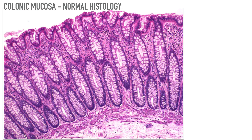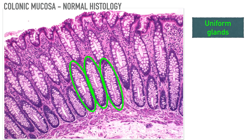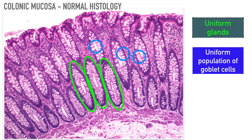To understand the histopathological changes in adenocarcinoma, you should understand the normal histology of colonic mucosa. At moderate magnification, you can see straight, uniform glands with a uniform cell population of goblet cells within the normal mucosa. The lamina propria is always infiltrated by a few leukocytes and blood vessels, with muscularis mucosa just below the mucosa lining and a bit of submucosa at the bottom.